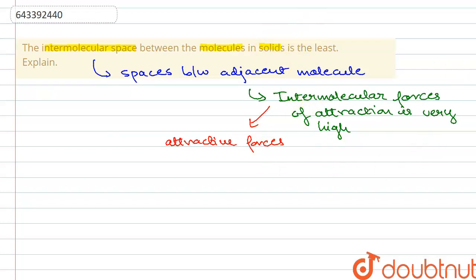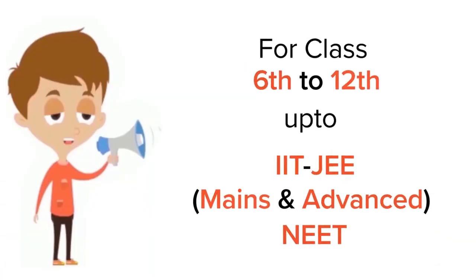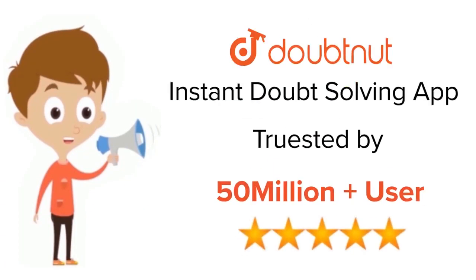In solids, the molecules are unable to move, so they are stuck at one position. That is the reason why solids have a definite shape and structure, whereas the other two states — liquids and gases — do not have a definite shape, because their intermolecular forces of attraction are weaker and the molecules are not held as tightly. So that is the explanation.